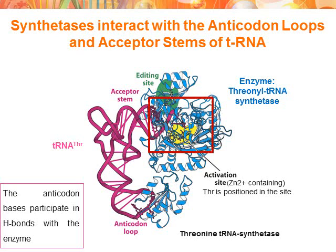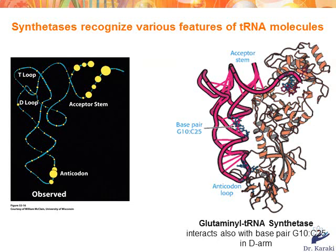The CCA arm of the tRNA expands into the enzyme's activation site, allowing threonine to be well positioned there. The enzyme also interacts with the anticodon loop, where the bases of the anticodon participate in hydrogen bonds with the enzyme. Synthetases also recognize various features of the tRNA molecule. For example, glutamine tRNA synthetase shows many interactions with both the anticodon loop and the acceptor stem. Additionally, some interactions are made near the elbow of the tRNA molecule, particularly with the base pair formed by C at position 10 and C at position 25.